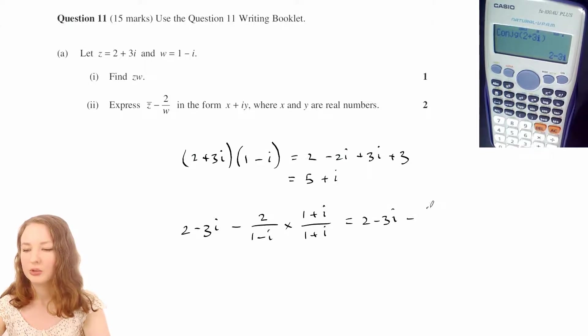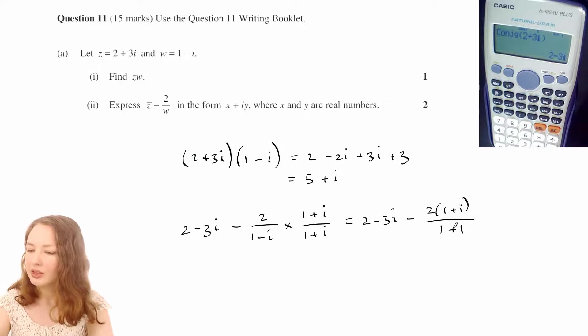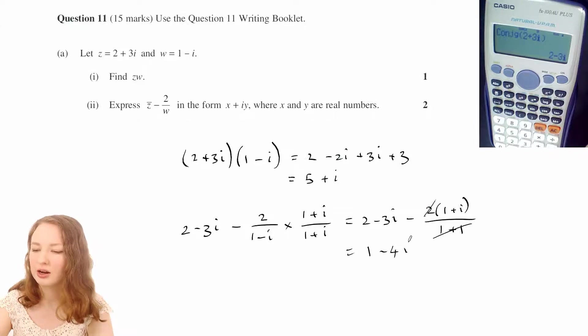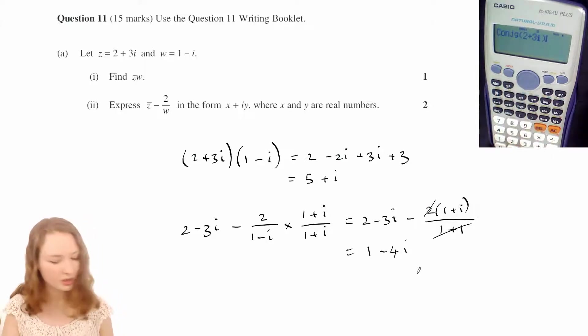So on the top we've got 2 times 1 plus i, and then on the bottom you end up with 1 plus 1 if you expand that. And then that makes 2, which cancels. So it's 2 minus 3i minus those, but 2 minus 1 is 1, and minus 3i minus i is negative 4i. So let's see that on the calculator as well.